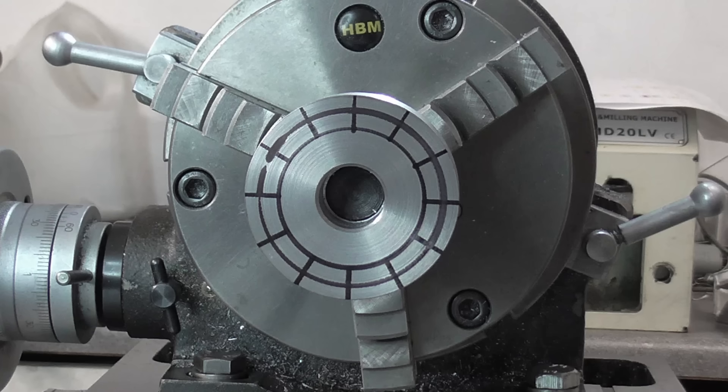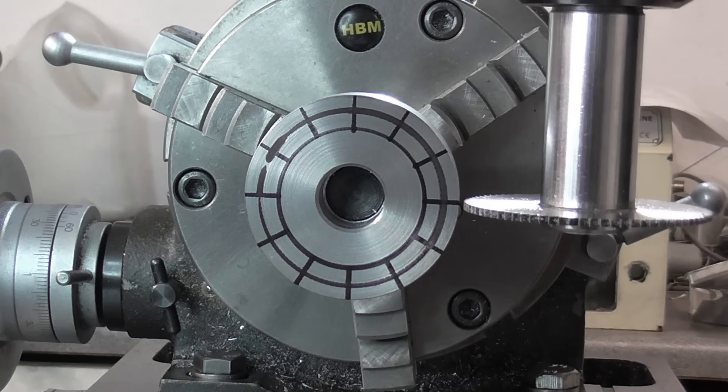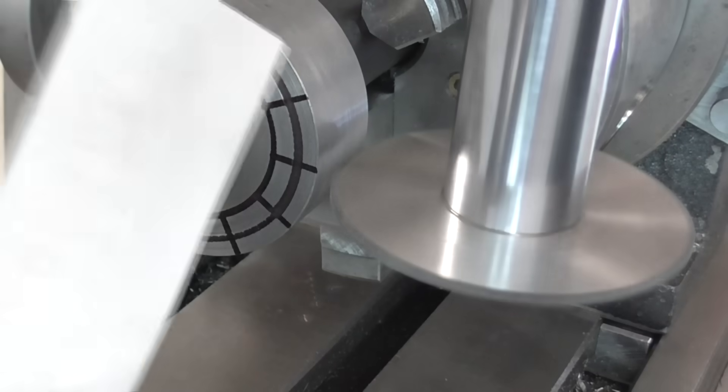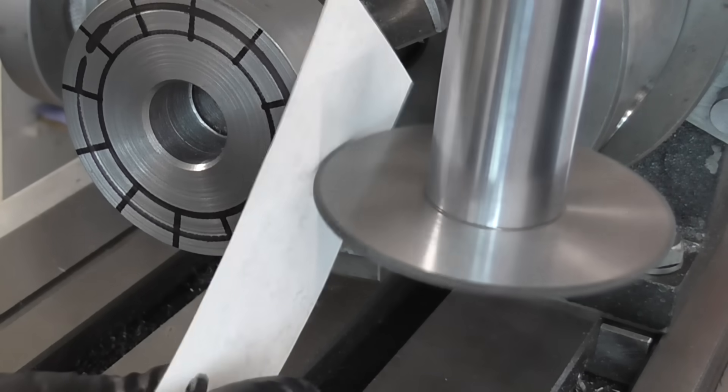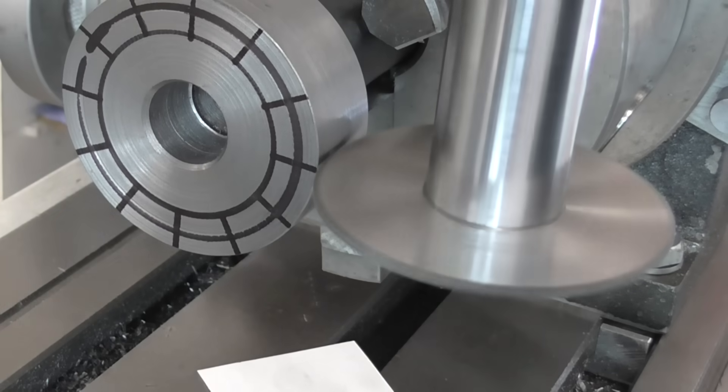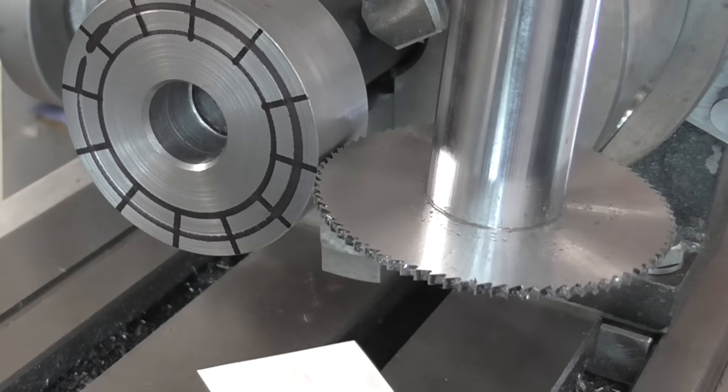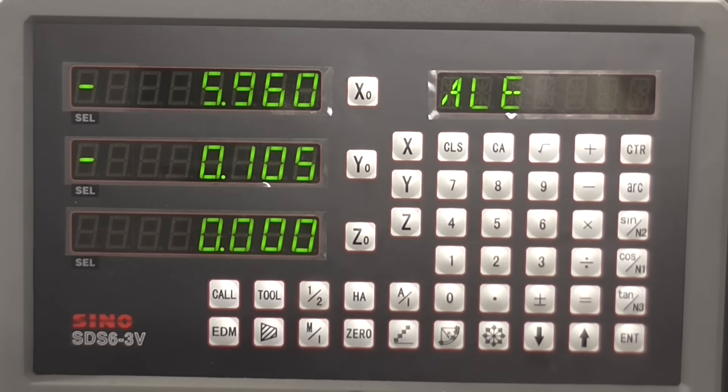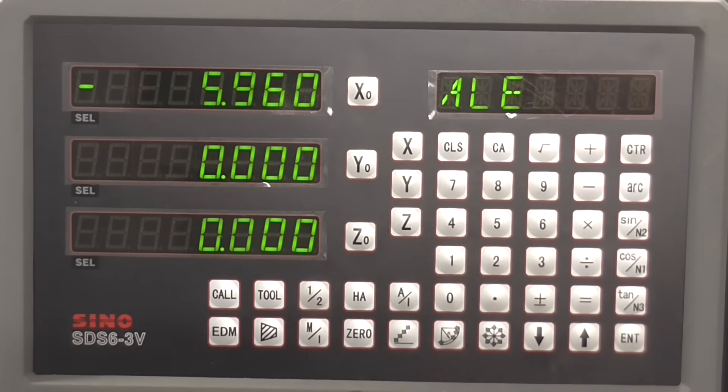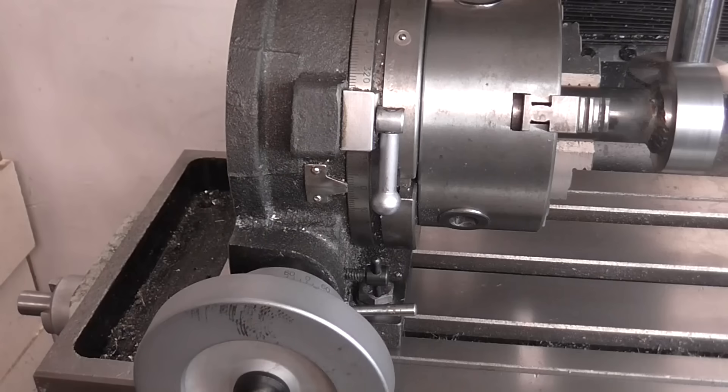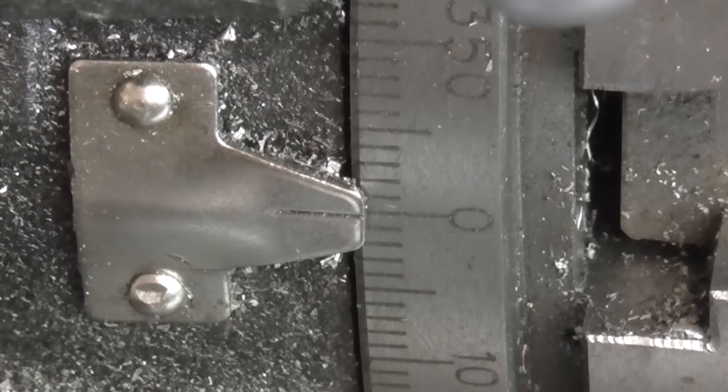I'm starting with the saw centered vertically with the blank. I touch off the saw on the side, and move in the thickness of the paper. Then set my axes to zero at this point. A DRO is helpful here, but you can also do it with dials. I also have the rotary table set to zero to start.